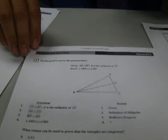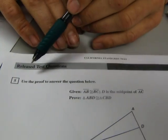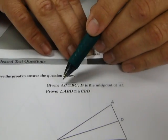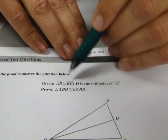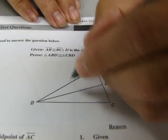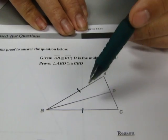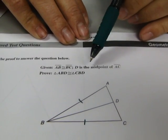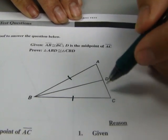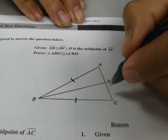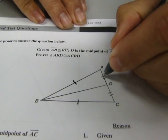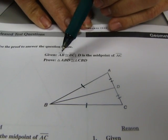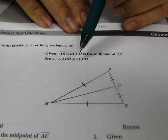All right, let's move on to number five. Use the proof to answer the question below. Given segment AB is congruent to segment BC. Okay, never, never hesitate to mark what it tells you right in your diagram immediately. Also says that D is the midpoint, midpoint, interesting, of segment AC. That means that this is exactly halfway in here. What that tells us is that these segments are congruent. So now we've got some knowledge here. And it says prove triangle ABD is congruent to triangle CBD.